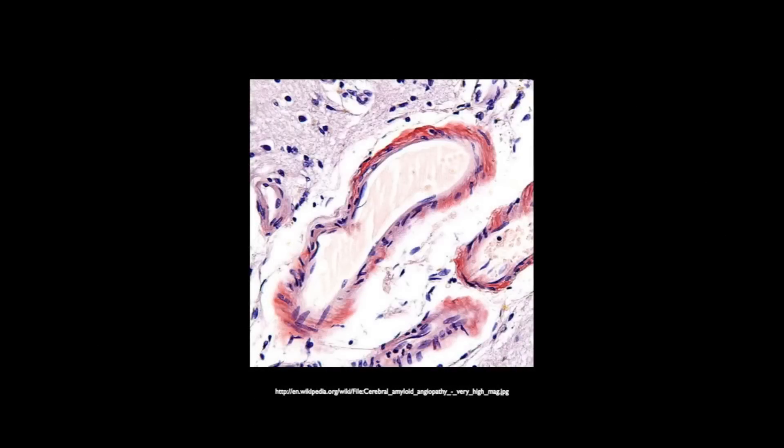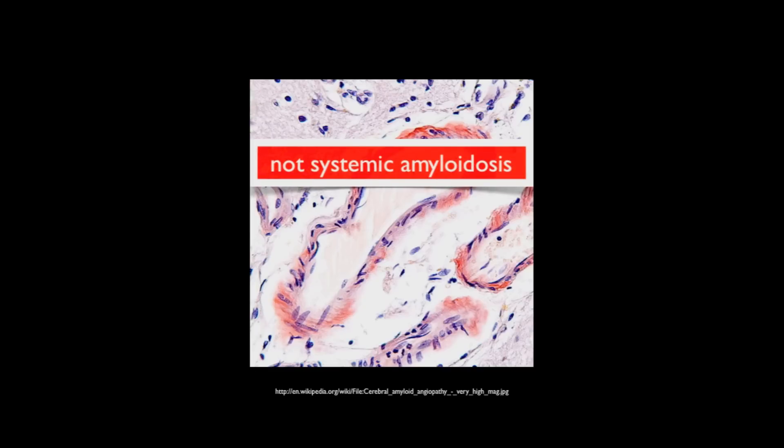Cerebral amyloid angiopathy is the underlying pathology seen in patients who develop lobar hemorrhages. It is also known as congophilic angiopathy, on account of the appearance of the amyloid deposits within the walls of the vessels seen on Congo red stain. Cerebral amyloid angiopathy should not be confused with systemic amyloidosis, as this histological change is seen only within the brain.